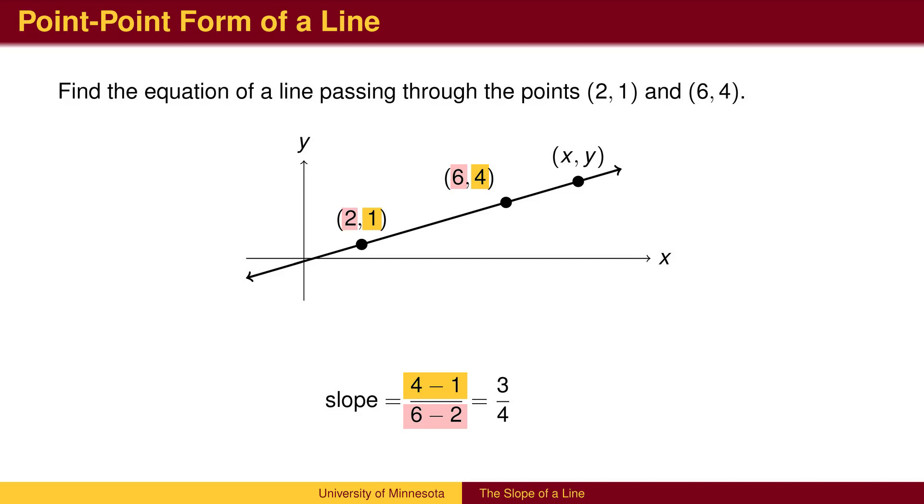In this case, we use the two known points to calculate the slope of 3/4. Once we know the slope, we write the general equation by writing the slope formula using the slope, an arbitrary point (x, y), and a known point.